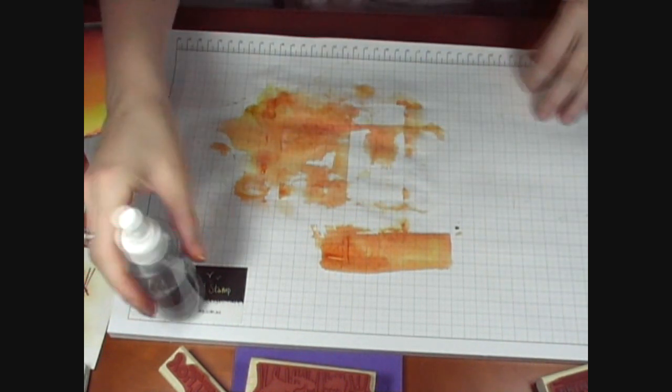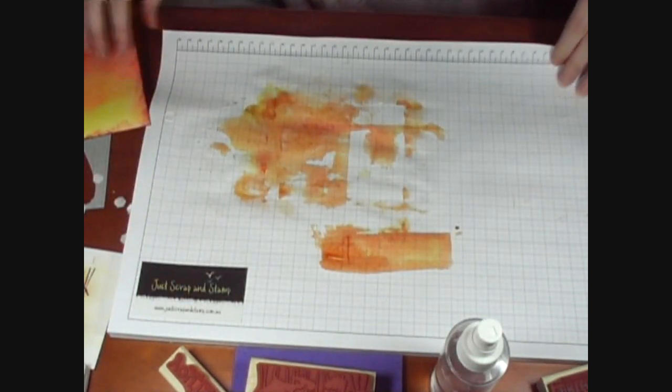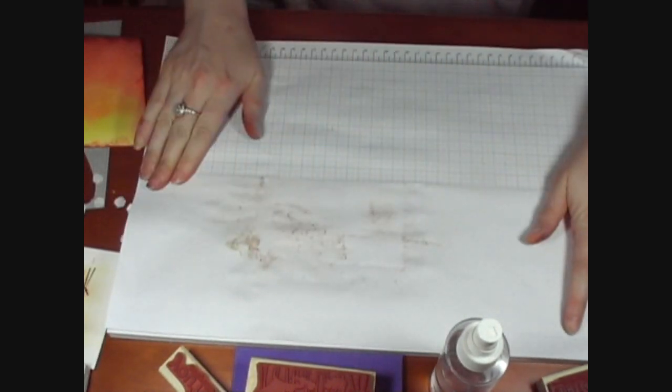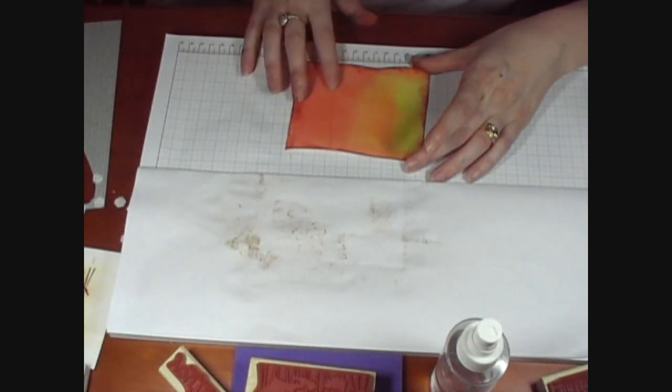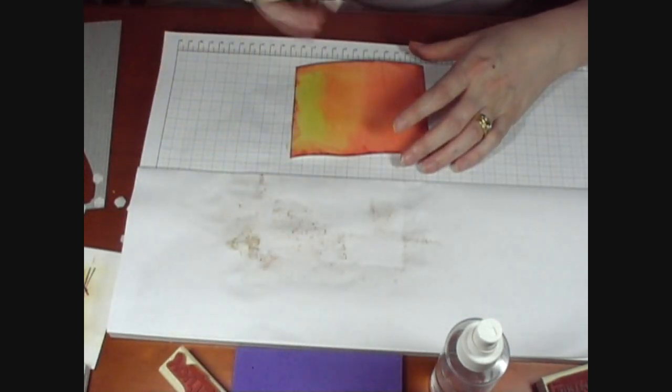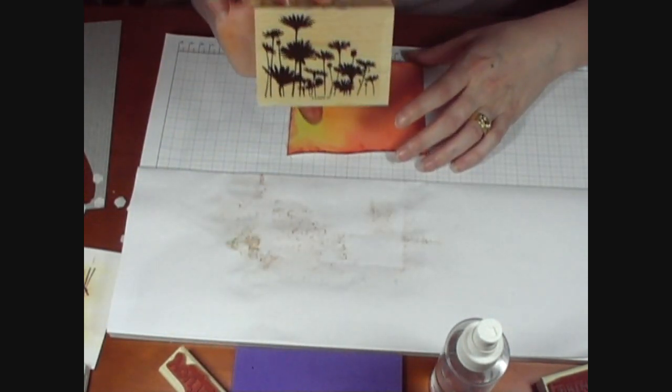So to use that in a project, just fold this over. You can use it with a stamp. A silhouette stamp looks particularly nice with this sort of effect, so I've got a stamp out of the Stampin' Up Upsy Daisy set.